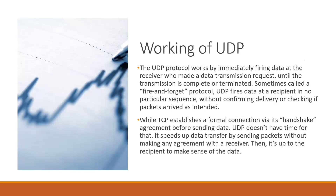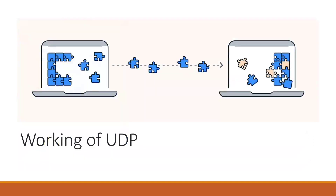This is the working of UDP — the sender side and the receiver side, with data being transmitted from sender to receiver. The data is transmitted not in sequential order, as packets are sent independently.